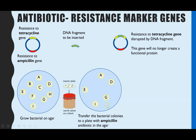Any of the colonies that do still grow tells us they must have the plasmid inside them, because they have that gene making them resistant to ampicillin, and therefore they are able to grow even though we have the ampicillin antibiotic present.